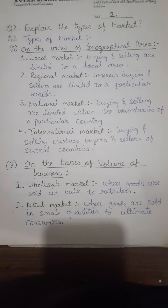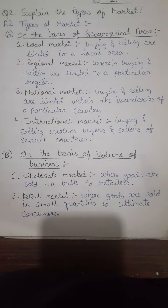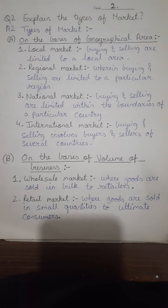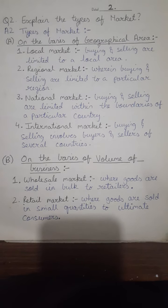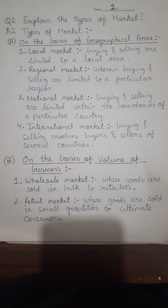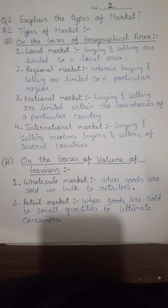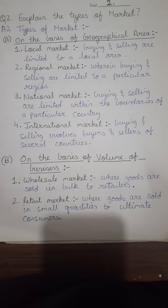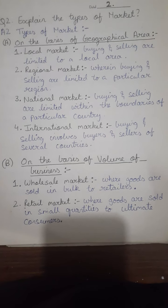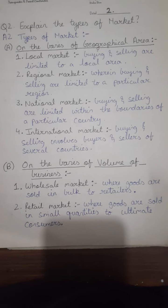The next type of market is on the basis of volume of business — wholesale market and retail market. Where goods are sold in bulk to retailers by wholesalers, that makes a wholesale market. When retailers sell goods in small quantities to the ultimate or end consumer, that constitutes the retail market.